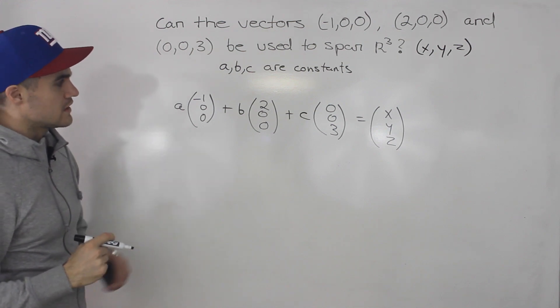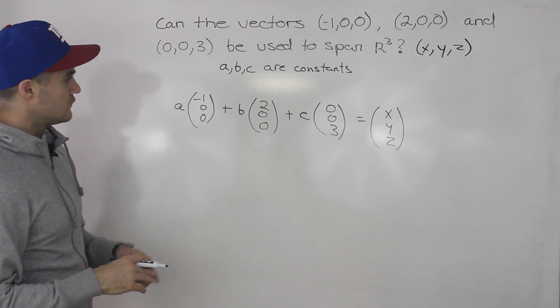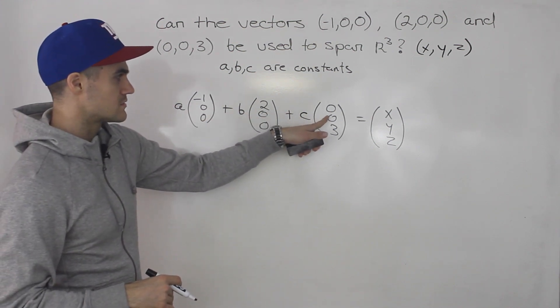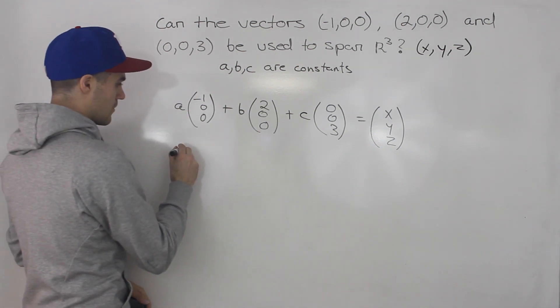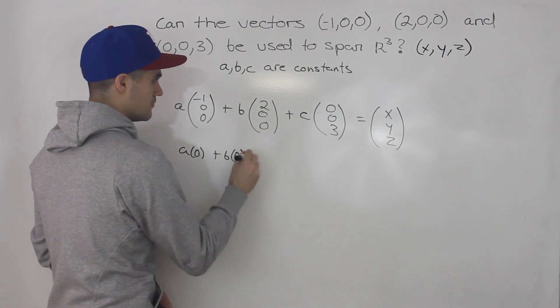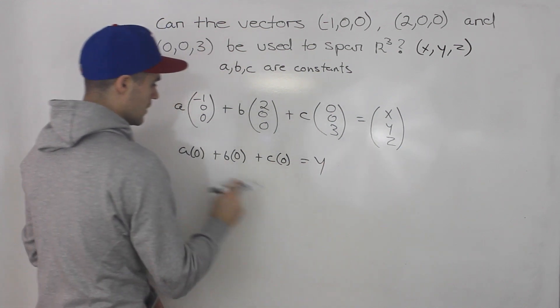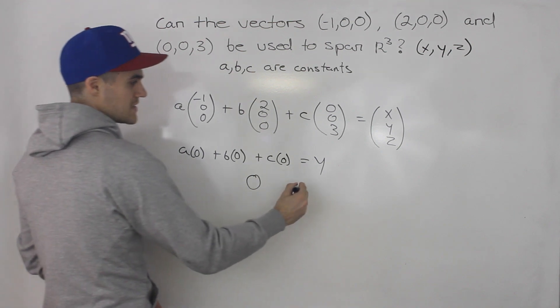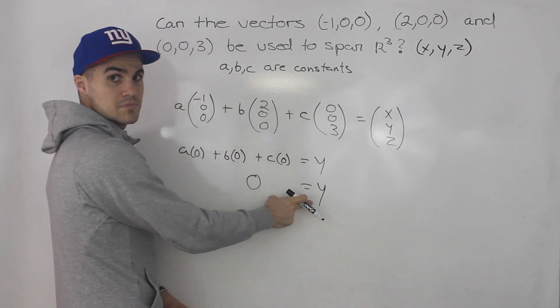Well if you look carefully, the answer is no. Why is the answer no? Well if you notice, all of the y values for the three vectors are zero. So notice how a times 0 plus b times 0 plus c times 0 equals y. Well notice on this left side we're always going to get zero.